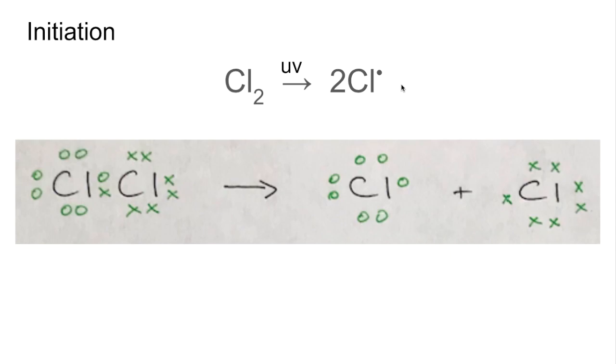So if we look at the dot and cross diagram, hopefully you can see more clearly what's happening. Here's our chlorine molecule. The bond's been broken in such a way that this chlorine on the left has kept that electron from the bond, and the chlorine on the right has kept that electron from the bond. So there's your unpaired electron which makes these radicals.